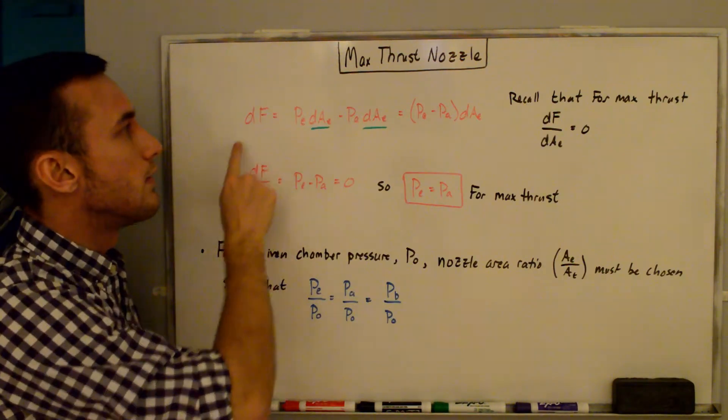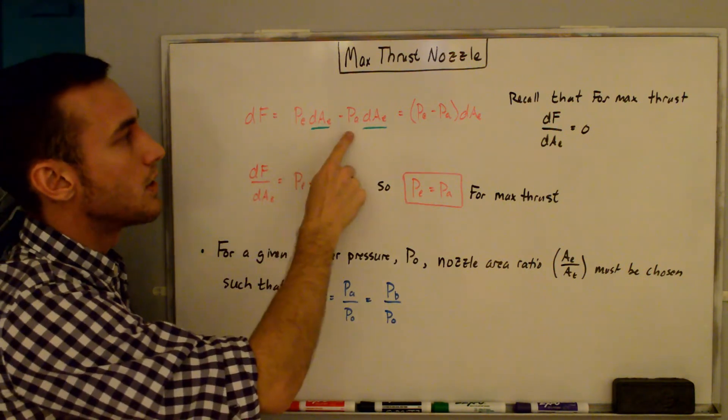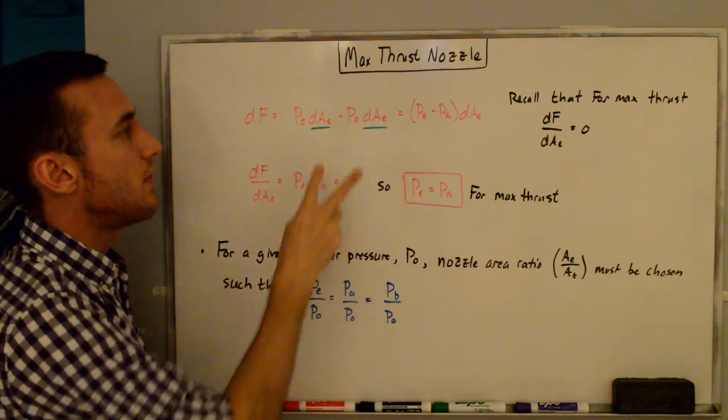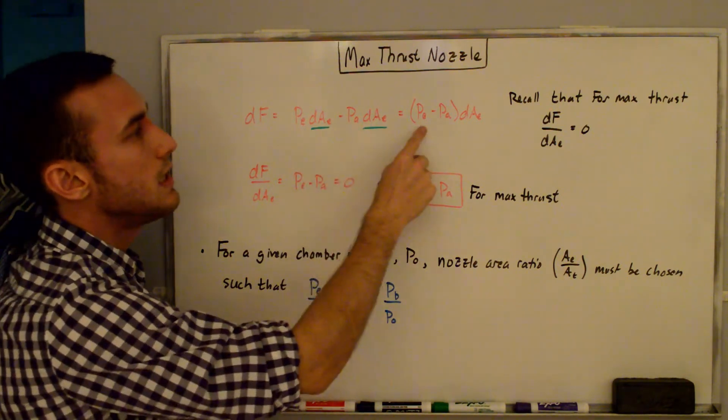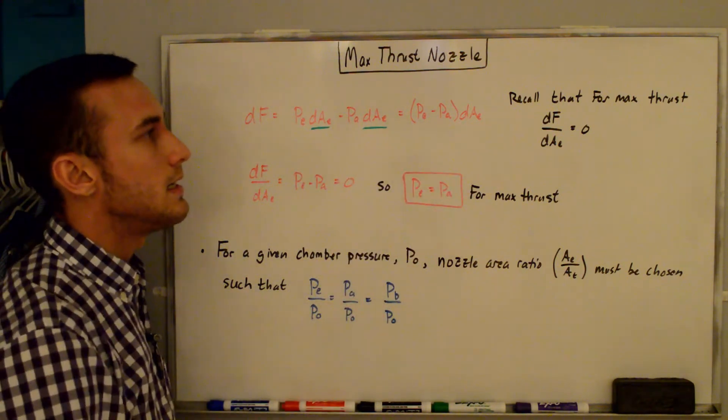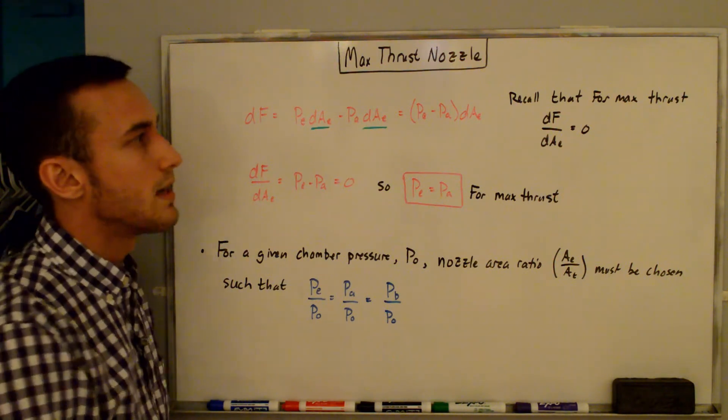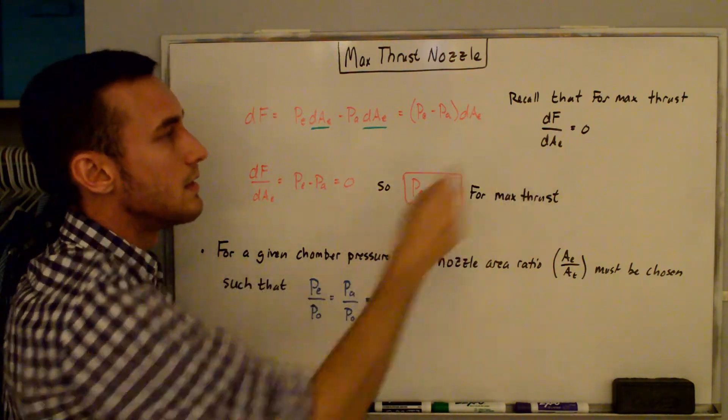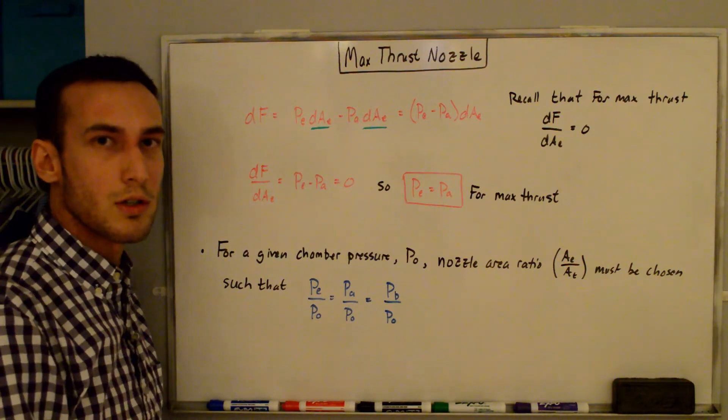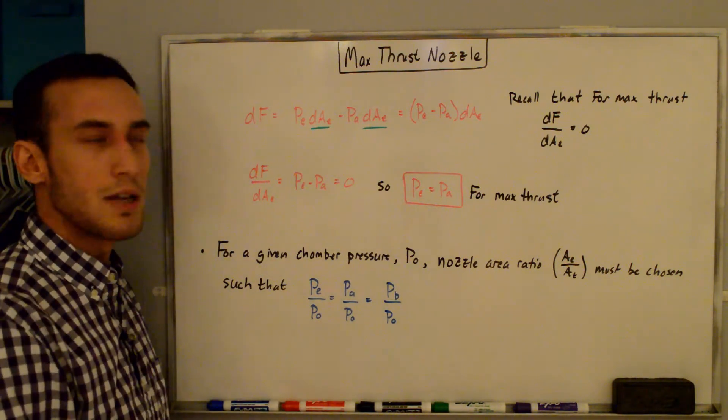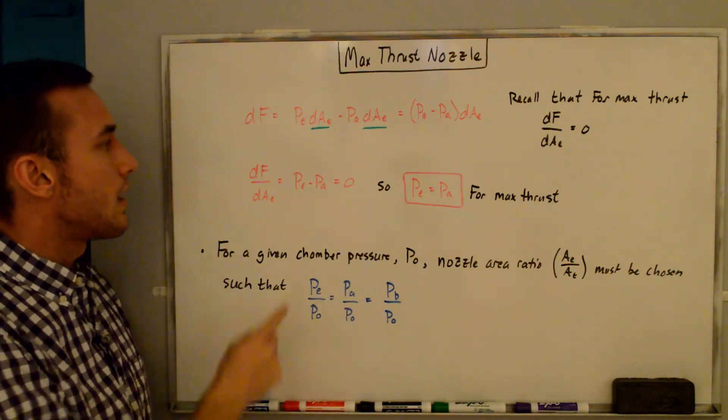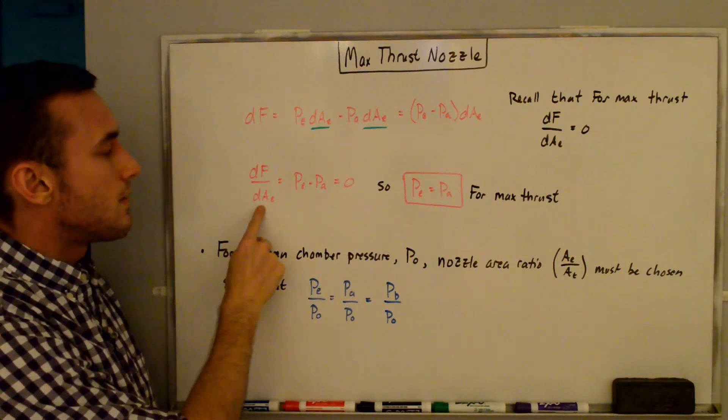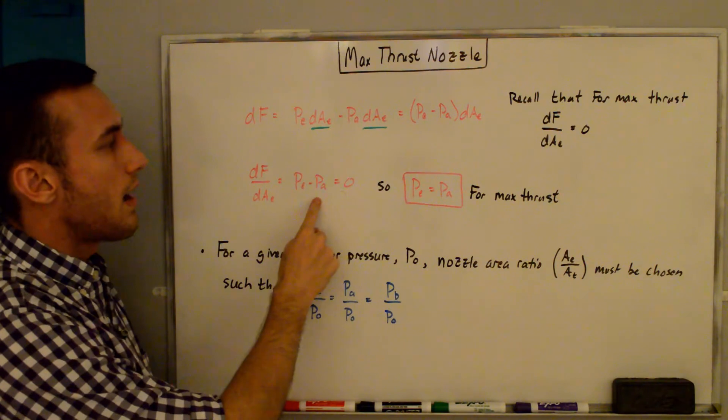Now I've rewritten the dF equation from the previous whiteboard as pEdAE - pAdAE. Note that these two terms have the common term dAE, so we factor that out to get (pE - pA)dAE. And recall that for the max thrust, we said that dF/dAE = 0, so that's the derivative of the thrust curve with respect to the exit area is equal to zero. So we divide through by dAE on both sides, and we are left with dF/dAE = pE - pA, and that's equal to zero.